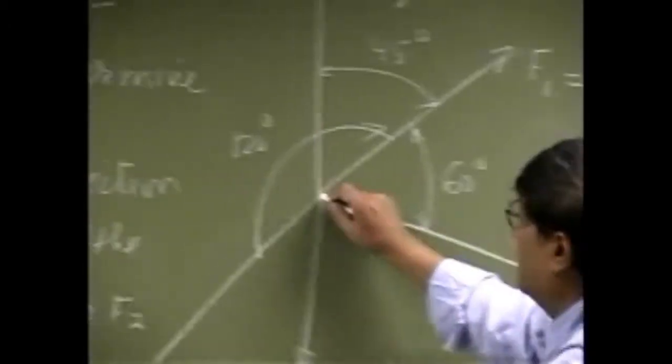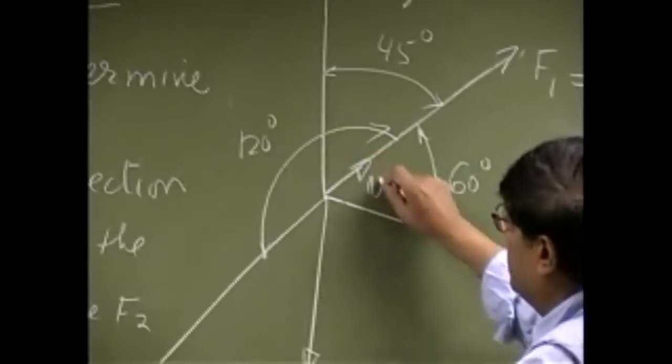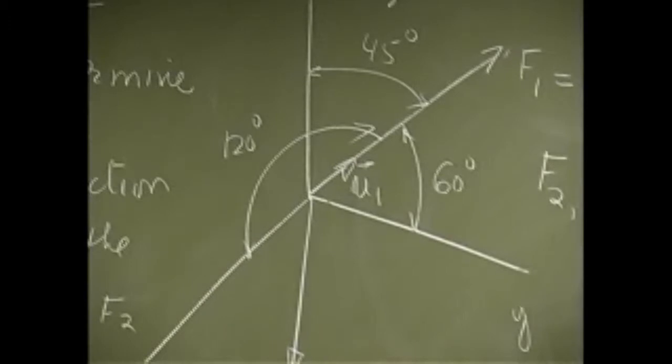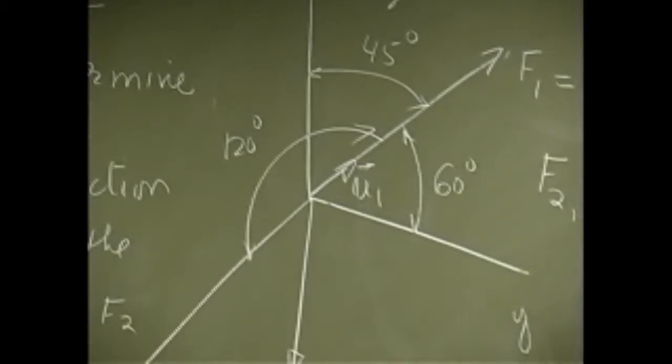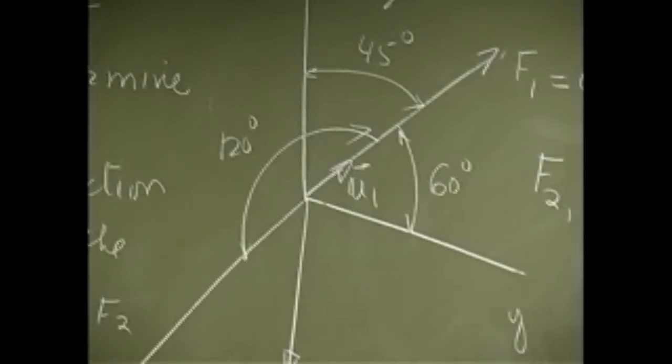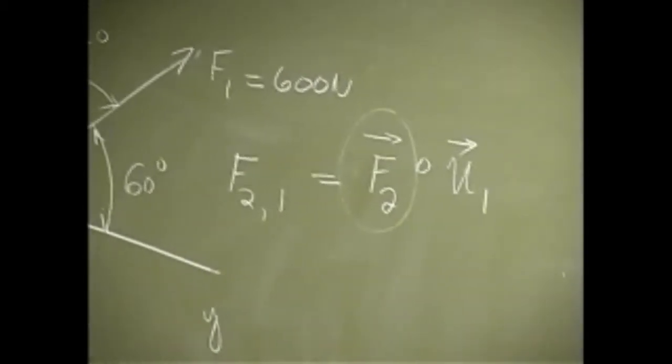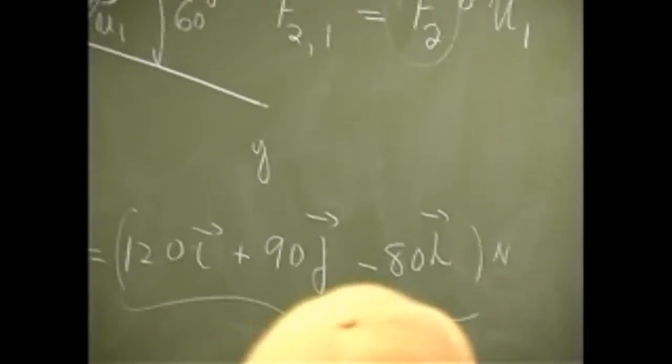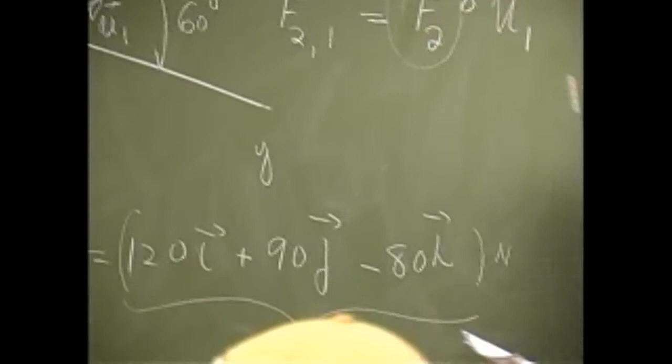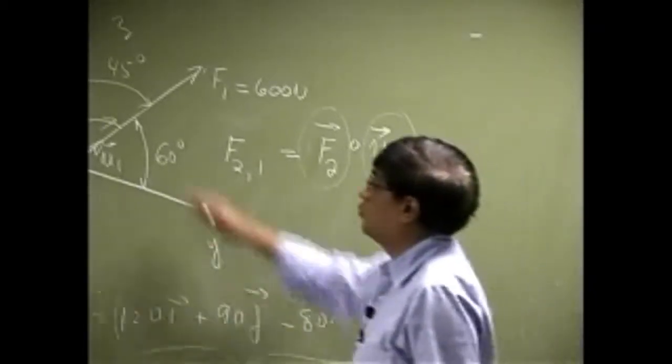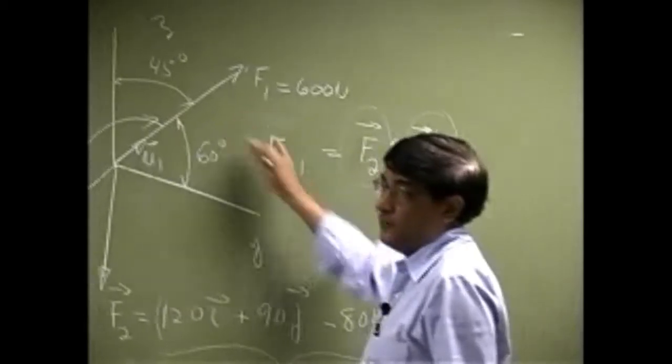So you're looking at a unit vector U1 in the direction of force F1. Now F2 is already known. We're given the whole thing in Cartesian vector form, so we don't have to do anything for that vector. But we do need to find U1 given the information about force F1.